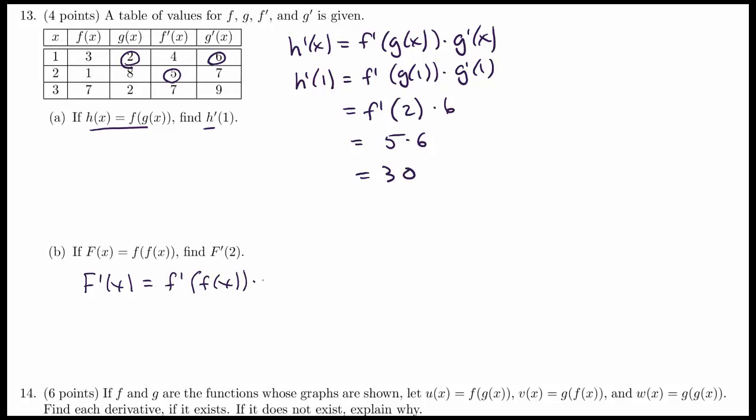Multiplied by the derivative of the inside. So big F prime of 2 is going to equal F prime of F of 2 multiplied by F prime of 2. F prime of 2 is 5.